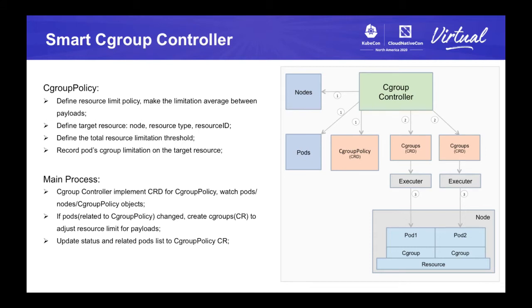We have introduced the cgroup controller design and implementation. We can find that the cgroup CRD is only used to configure the cgroup limitation, and for different payloads it is automatic but not smart. Here, we add a new CRD named cgroup policy to define the cgroup allocation policy. For a specific resource, the cgroup policy can support a spread resource allocation policy, which distributes the resource limitation evenly among the payloads working on that resource. The CRD can define the target resource, including target node and target resource ID, which is uniquely defined in the cluster.